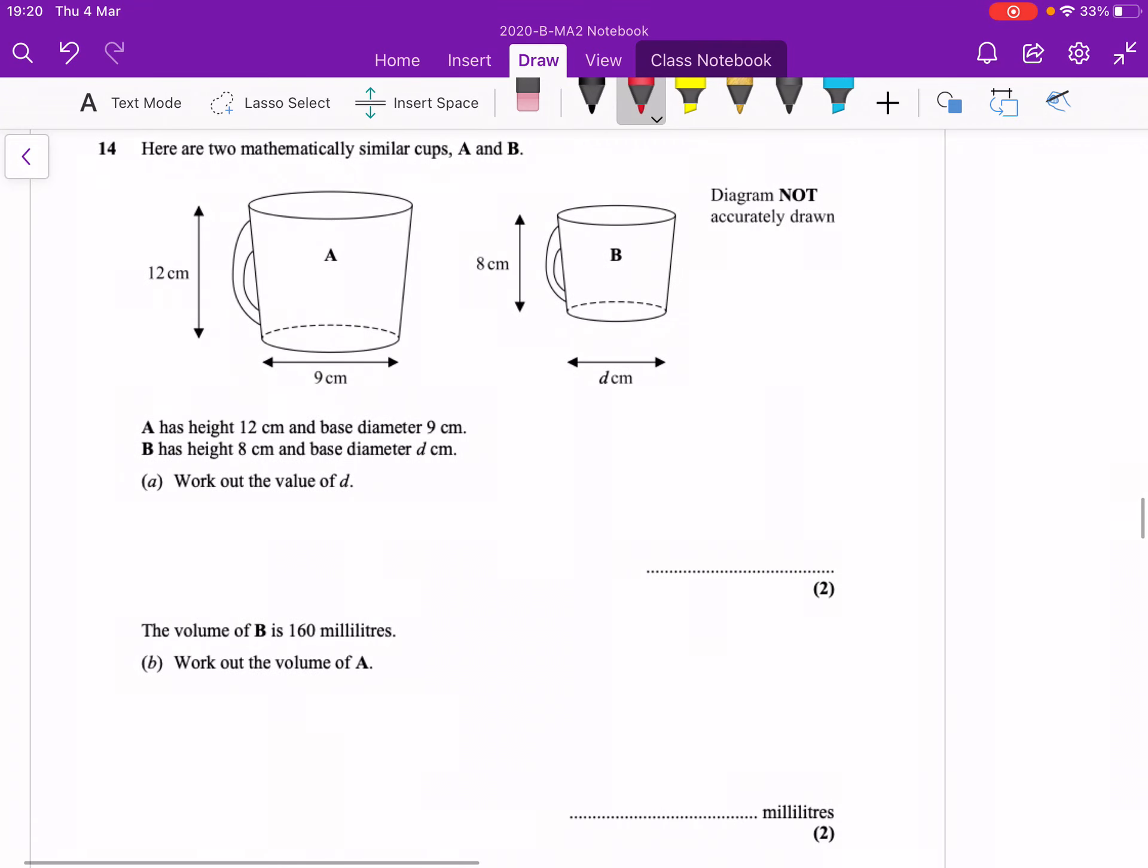Question number 14. Here we've got two mathematically similar cups, so that means we've got an enlargement taking place, a scale factor.